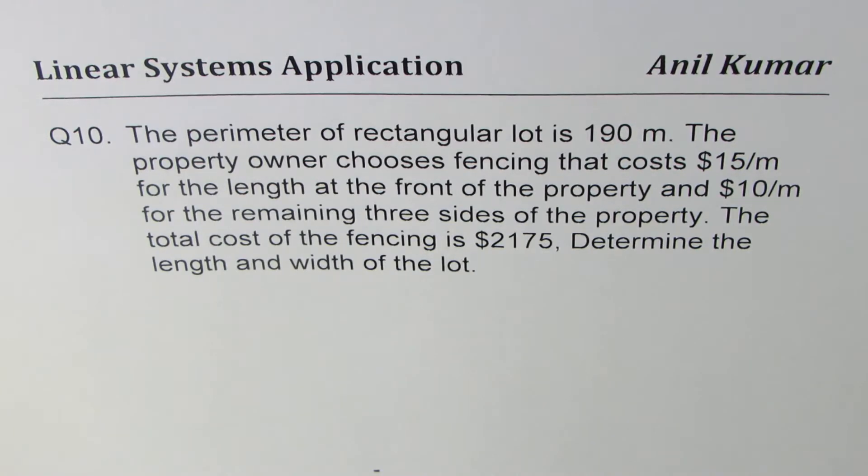The property owner chooses fencing that costs $1.15 per meter for the length at the front of the property and $1.10 per meter for the remaining three sides of the property. The total cost of fencing is $2,175.